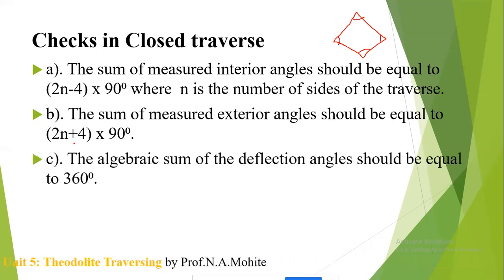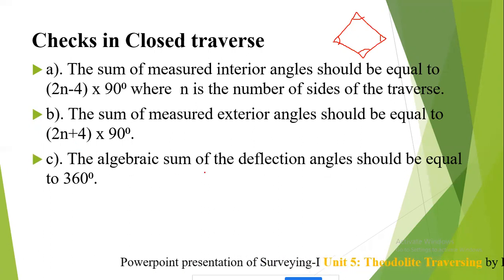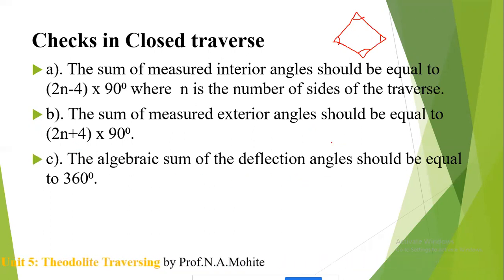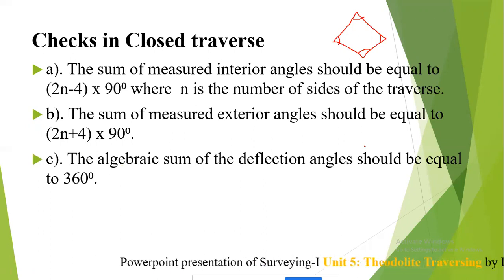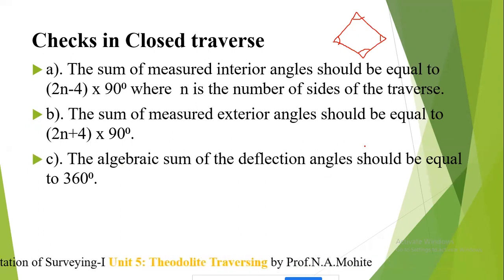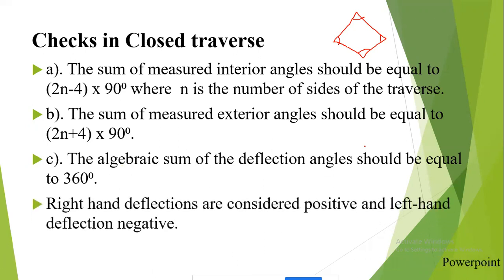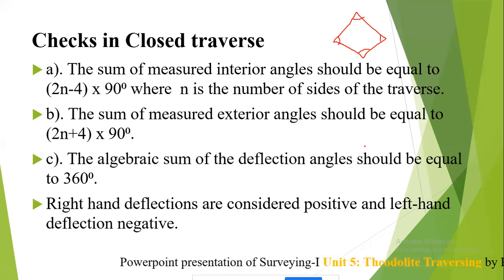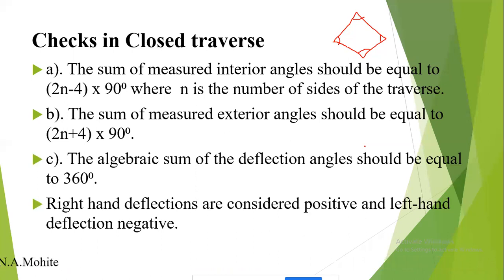The third check: the algebraic sum of the deflection angles should be equal to 360°. The deflection angle occurs whenever there is a change in the direction of the path, and the summation of all deflection angles should equal 360°. Right-hand deflections are considered positive and left-hand deflections are considered negative.